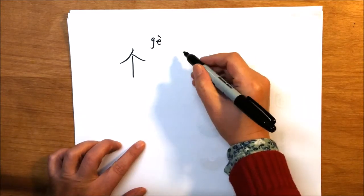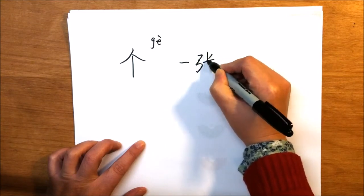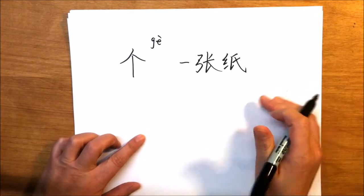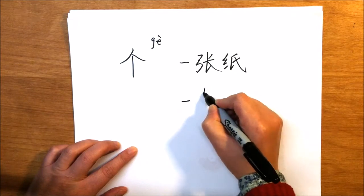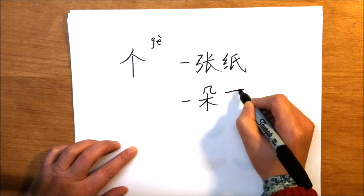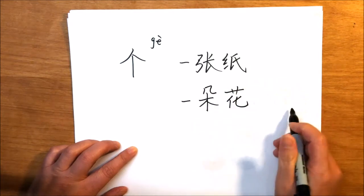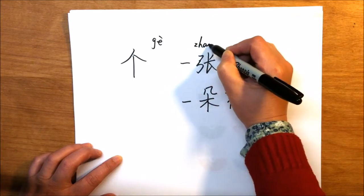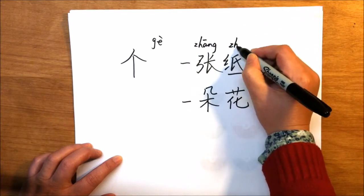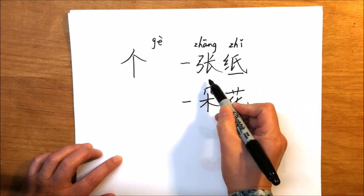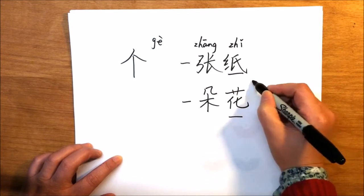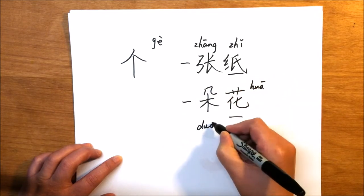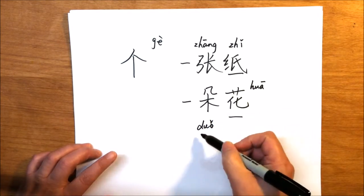Such as 一张纸 (one sheet of paper) and 一朵花 (one flower). So you see here the 纸, paper, requires a measure word 张. And 花, flower, requires a measure word 朵, as in 一朵花.